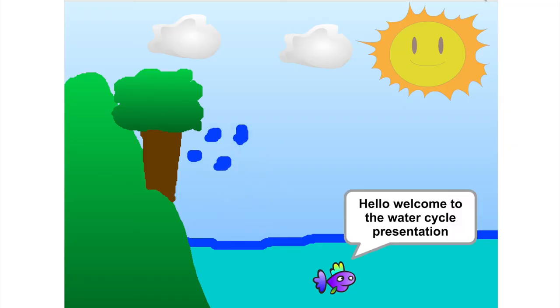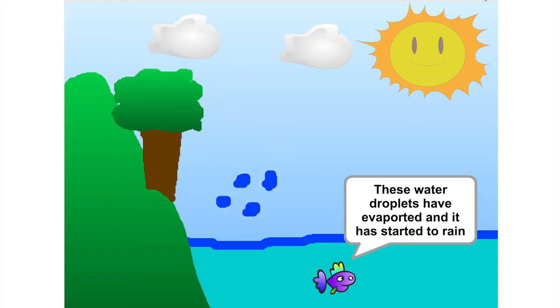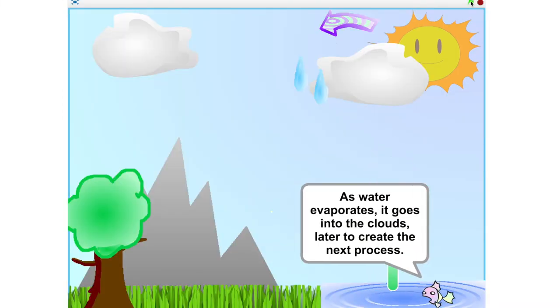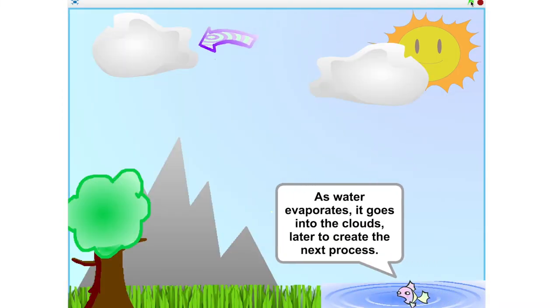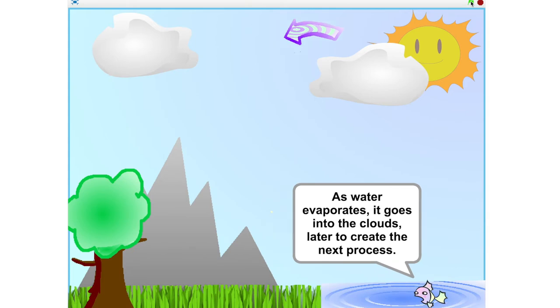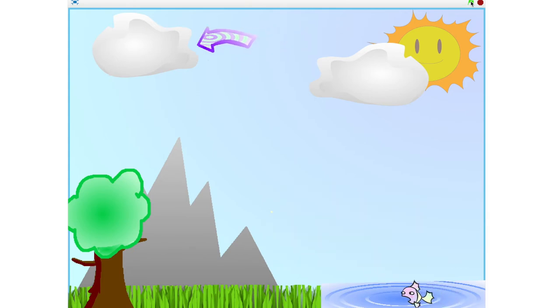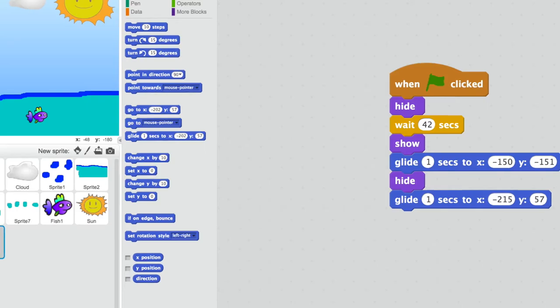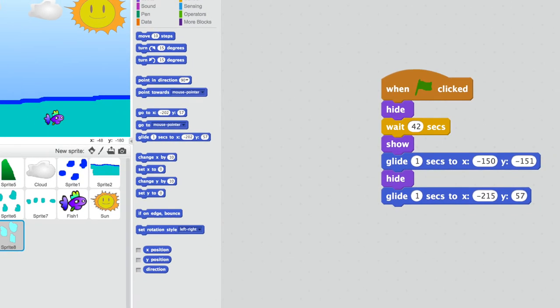We learned the process of the water cycle and its stages. We learned that when air turns cold, it turns into a liquid and falls from the sky as precipitation.